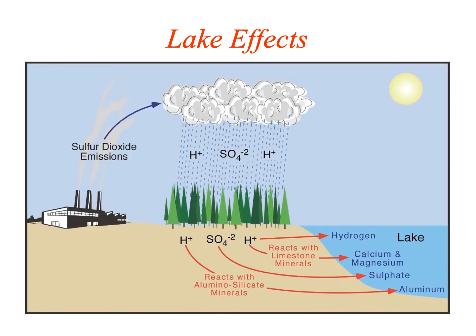A diagram illustrates the process: sulfur dioxide emissions lead to hydrogen ions and SO4 falling from clouds. These accumulate at the soil surface and into the soil. Some react with limestone minerals, releasing calcium and magnesium to the lake. Some hydrogen and sulfate enter the lake directly. Sometimes acids interact with clay micelles, releasing aluminum, mercury, and cadmium, which then migrate through groundwater into the lake.